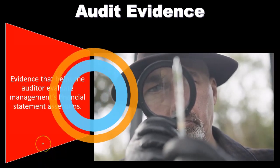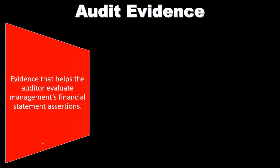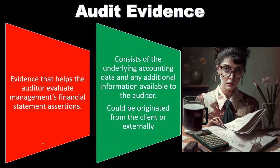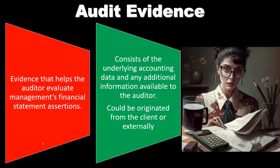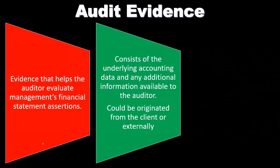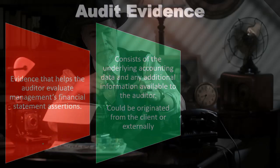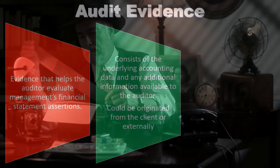Audit evidence — evidence that helps the auditor evaluate management's financial statement assertions — consists of underlying accounting data and any additional information available to the auditor. That information could be generated from the client or originated externally. We'll talk about how to gather audit evidence and what the value or ranking of that evidence is, just like a detective figuring out how valuable each piece of evidence is.